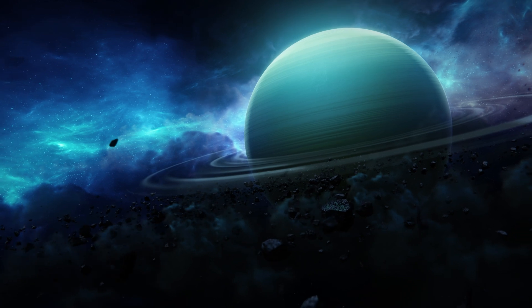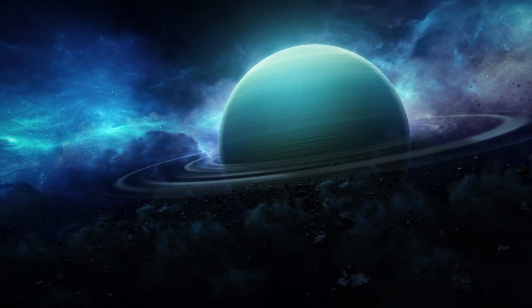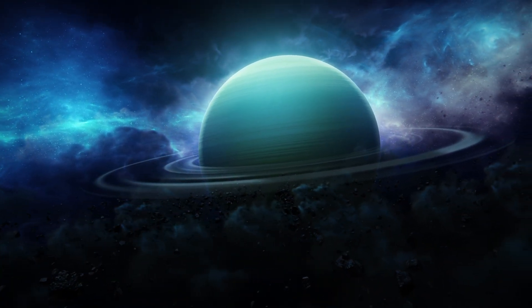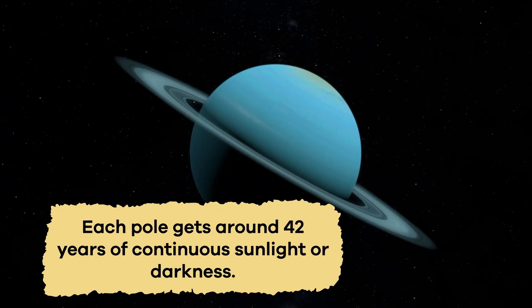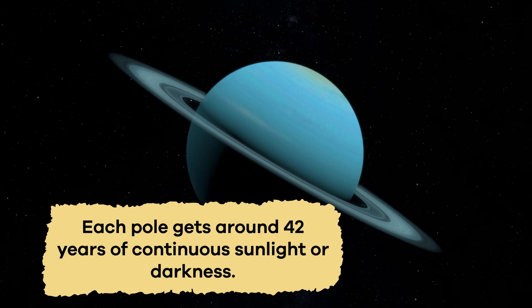The tilt, coupled with its cold temperatures, means that Uranus experiences violent winds, storms, and extreme seasons. Each pole gets around 42 years of continuous sunlight or darkness.